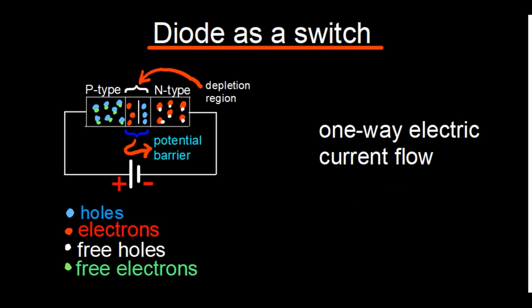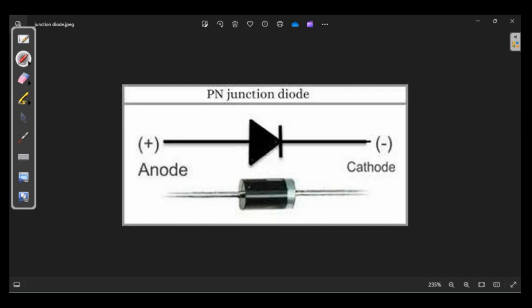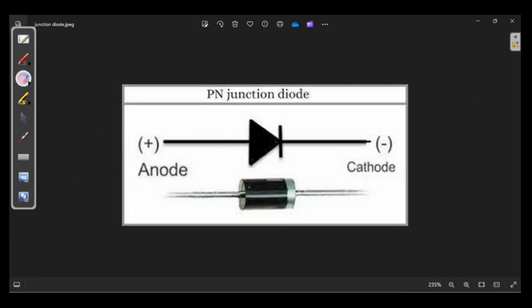To understand the makeup and working principle of a diode, let's look at this picture. That is a picture of a diode, and it's similar to the one we're going to use in the demonstration. We also have here the general symbol of a diode. Depending on the type of diode, the symbol might have some differences, but this is the general symbol. You'll observe it has two terminals: the anode, which is positive, and the cathode, which is negative.